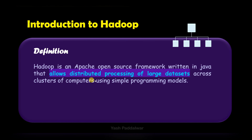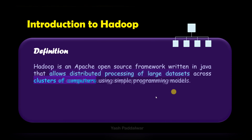The next part is that it allows distributed processing of large datasets. Big data deals with larger data, and if we try to process such large data in a centralized architecture, it will be a really difficult task. Hence, a distributed processing architecture is followed for dealing with larger datasets.